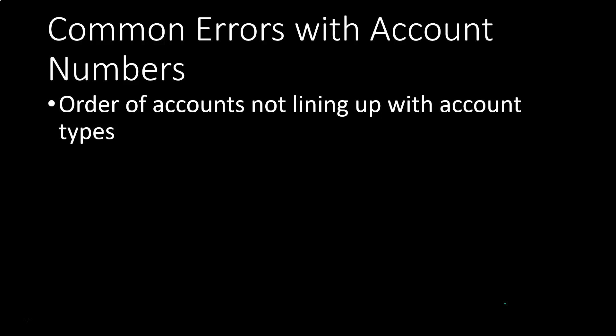The first issue is the order of the accounts not lining up with account types. If you set up your chart of accounts, remember that they're going to be in order primarily by account type — which you can think of most basically as the balance sheet on top of the income statement. In other words, assets, liabilities, and equity type accounts, then income and expense type accounts, and then more detailed categories within those major groupings.